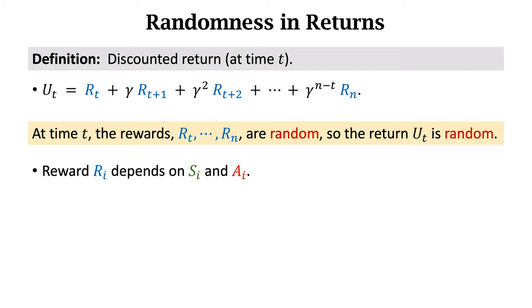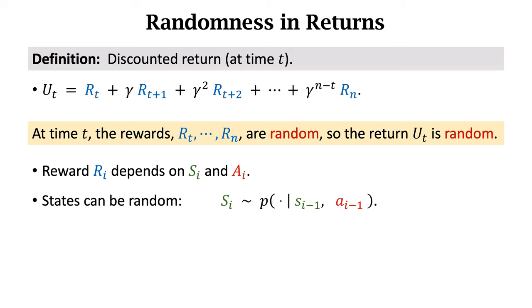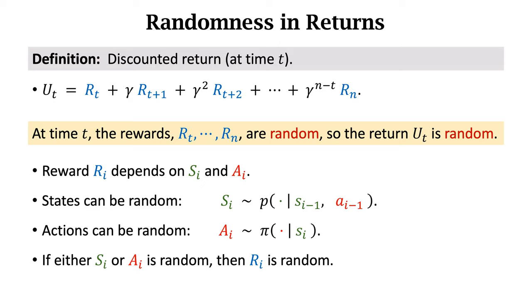Let's analyze the sources of randomness. Reward Ri depends on state Si and action Ai. The next state is randomly sampled from the state transition function. Actions can be random, sampled from the policy function. If either Si or Ai is random, then reward Ri is random.